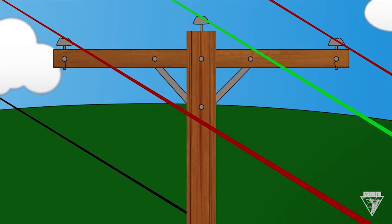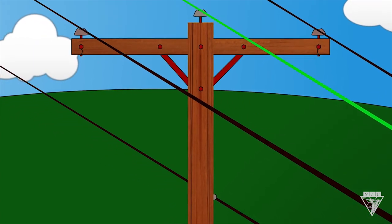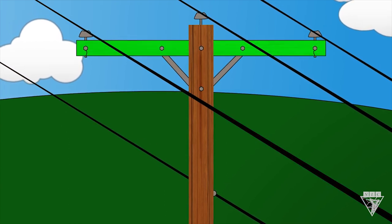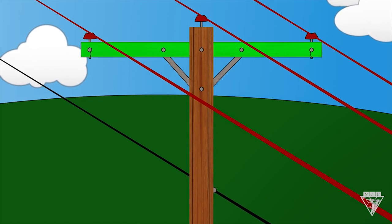Then a second point of contact could be an opposite phase, the neutral, hardware, or anything else of a different potential. If your first point is the cross arm or other hardware on the pole, then it could be an energized phase or anything else of a different potential.